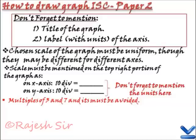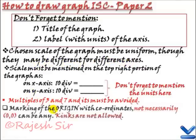Chosen scale of the graph must be uniform though they may be different for different axes. So it can be different for different axes. Please take care of this part. It can vary for axes.